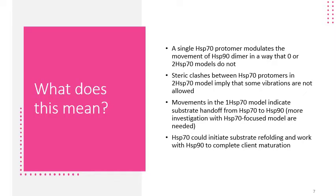So what does this mean? This means that a single Hsp70 protomer modulates the movement of the Hsp90 dimer in a way that zero or two Hsp70 models do not. These steric clashes between the Hsp70 protomers in the two Hsp70 model imply that some of the vibrations are not allowed. And these movements in the one Hsp70 model indicate substrate handoff from Hsp70 to Hsp90. Hsp70 could initiate the substrate refolding and work with Hsp90 in client maturation in the one Hsp70 model.